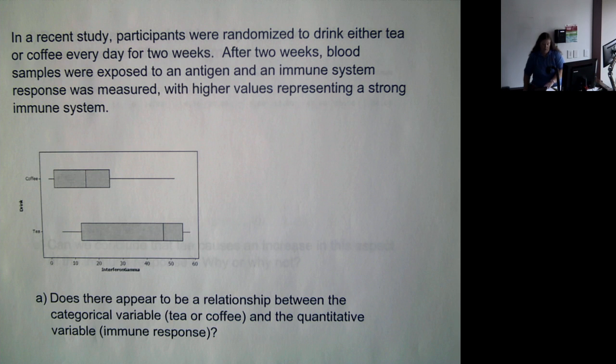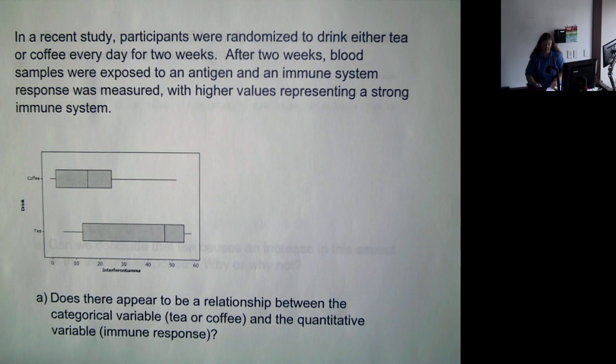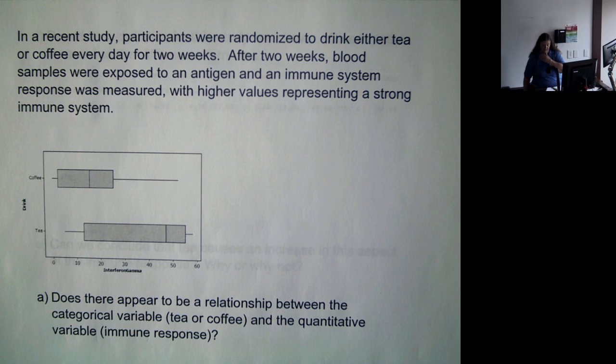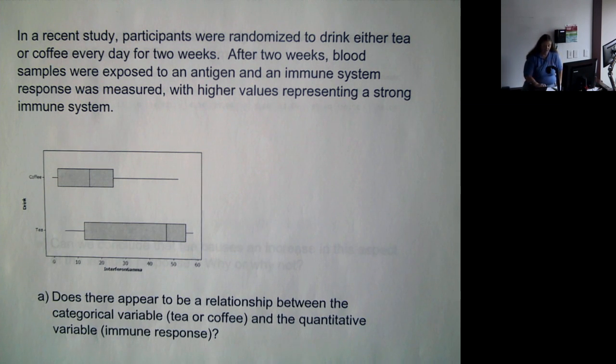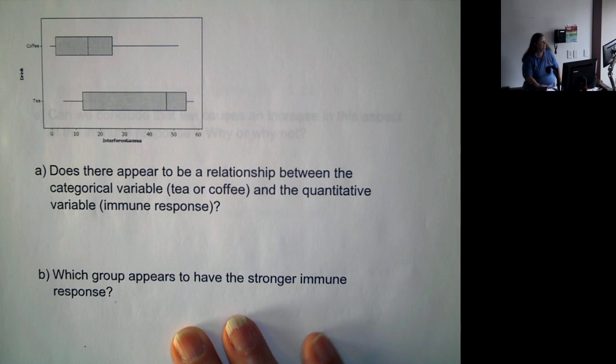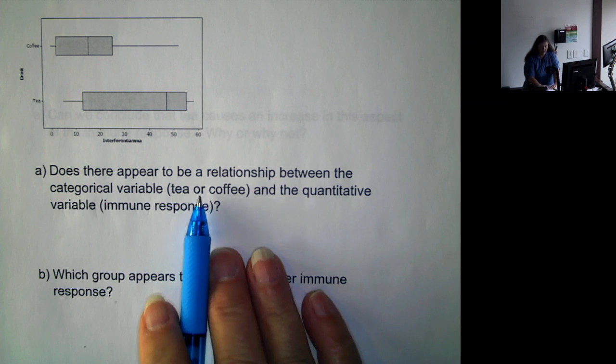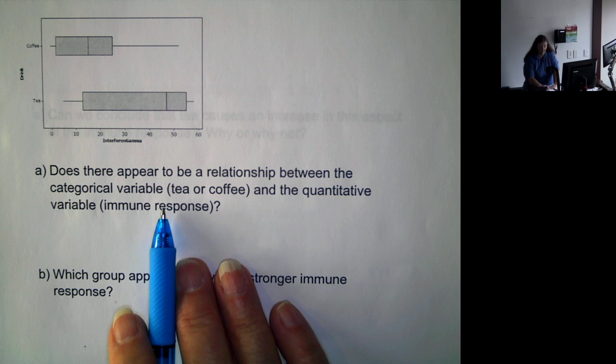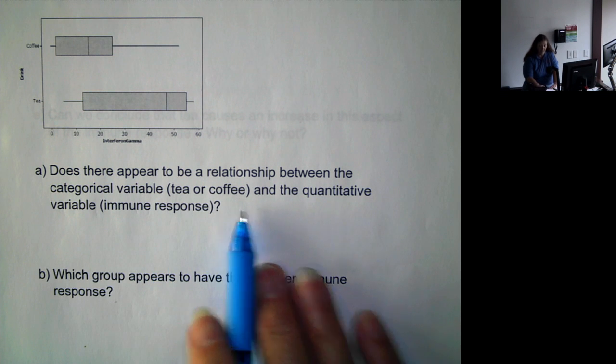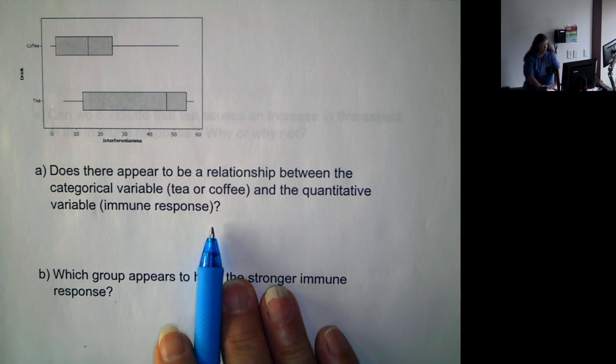Now, we're going to be comparing box plots. So in a recent study, participants were randomized to drink either tea or coffee every day for two weeks. After two weeks, blood samples were exposed to an antigen, and an immune system response was measured, with higher values representing a strong immune system. So here are the two box plots. Does there appear to be a relationship between the categorical variable, tea or coffee, and the quantitative variable, immune response?